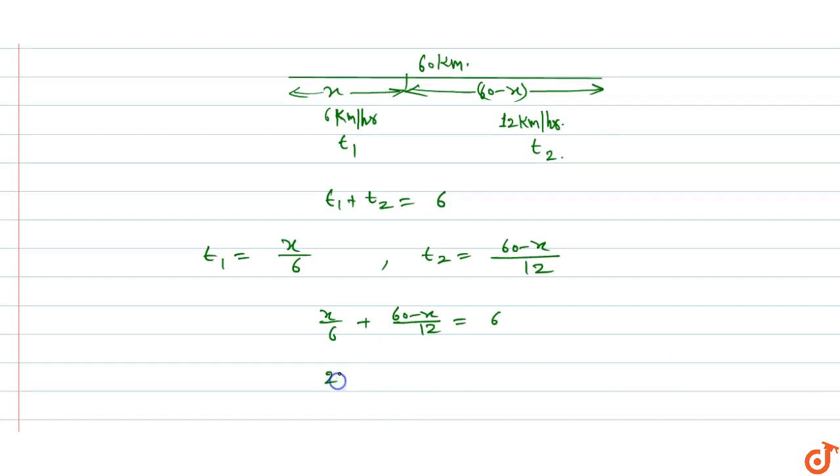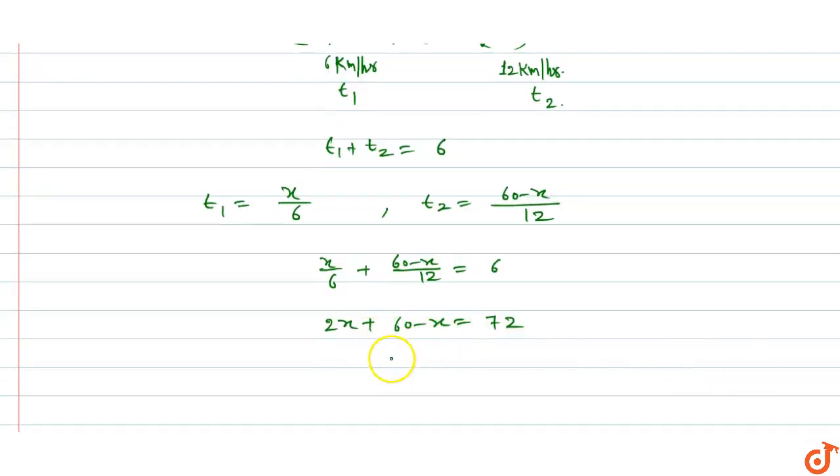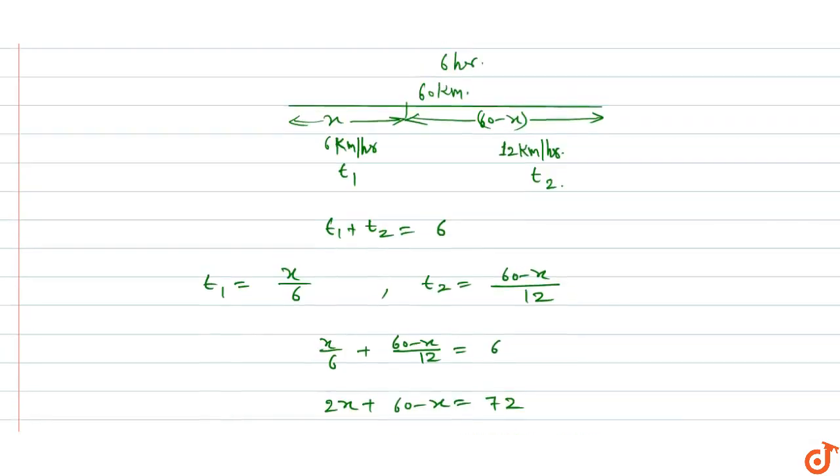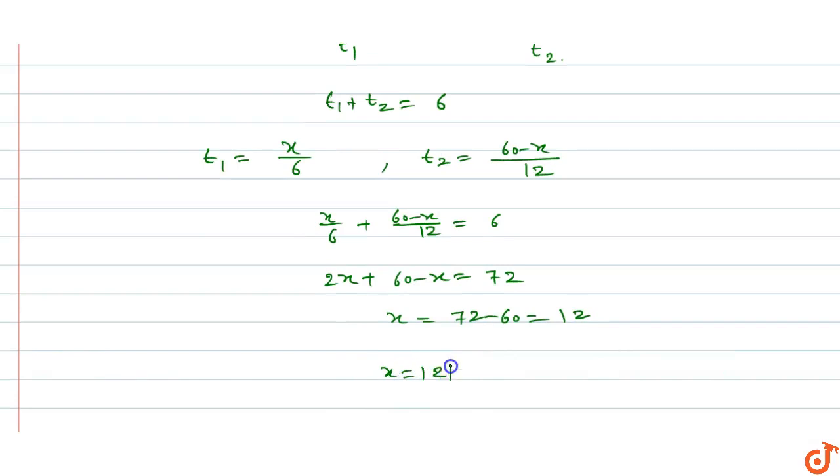Multiply the whole equation by 12: 2x plus 16 minus x equals 72. x equals 72 minus 16, x equals 12 kilometers.